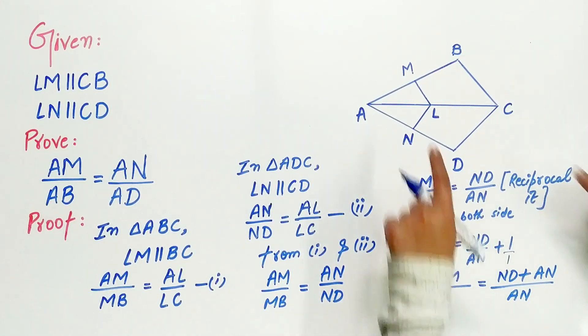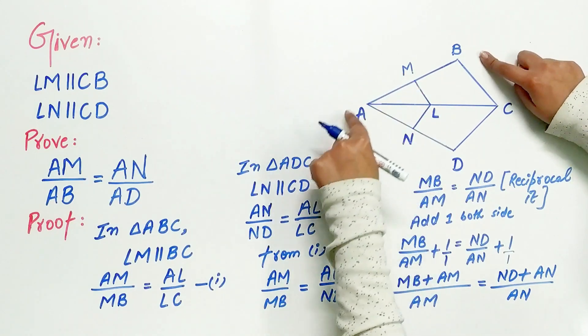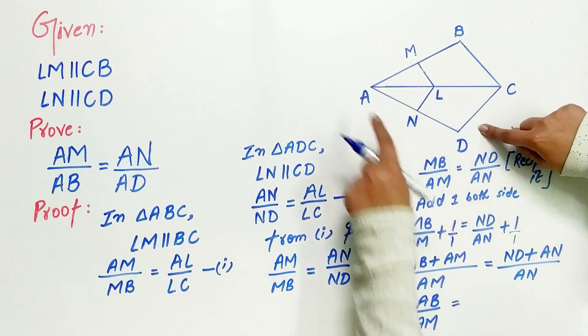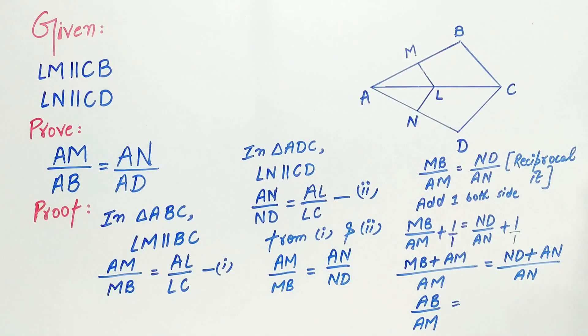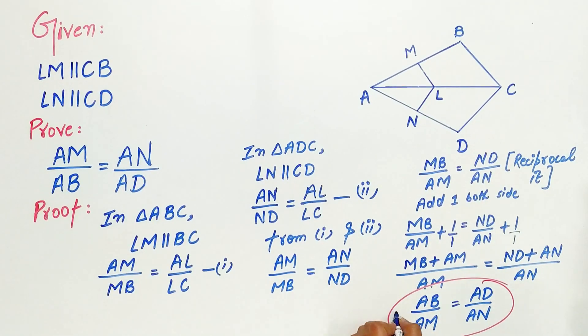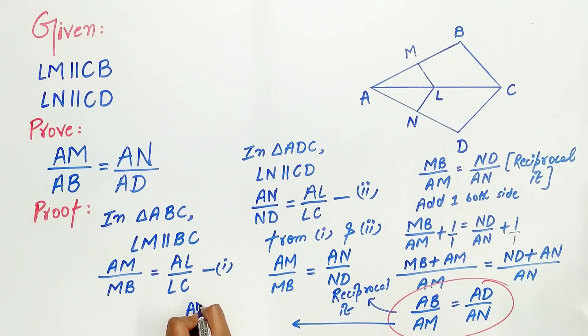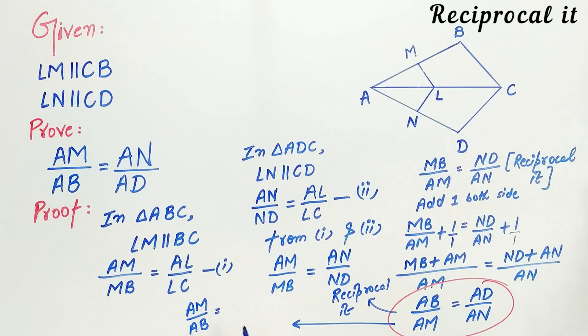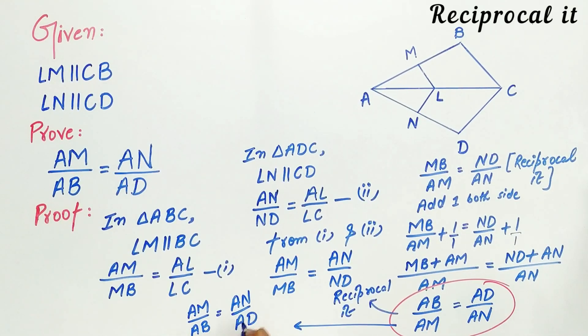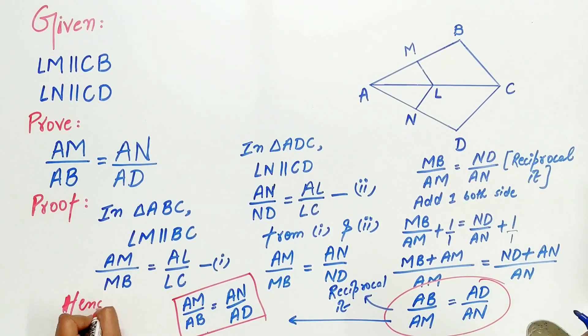Now, MB plus AM is AB. ND plus AN is equal to AD by AN. Now, the last step is to reciprocate. Hence, AM by AB is equal to AN by AD. Hence, proof.